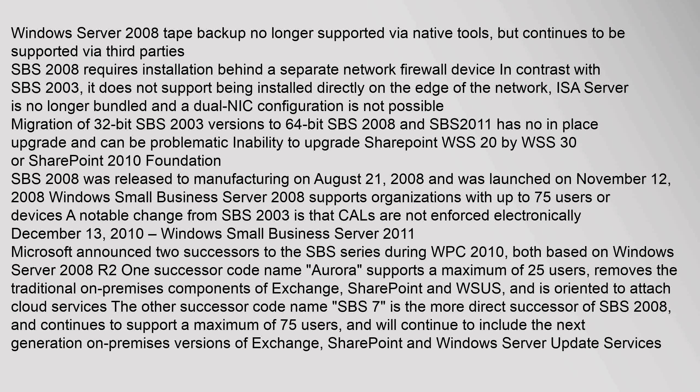Both successors are based on Windows Server 2008 R2. One successor, codename Aurora, supports a maximum of 25 users, removes the traditional on-premises components of Exchange, SharePoint, and WSUS, and is oriented to attach cloud services. The other successor, codename SBS 7, is the more direct successor of SBS 2008 and continues to support a maximum of 75 users, and will continue to include the next-generation on-premises versions of Exchange, SharePoint, and Windows Server Update Services.